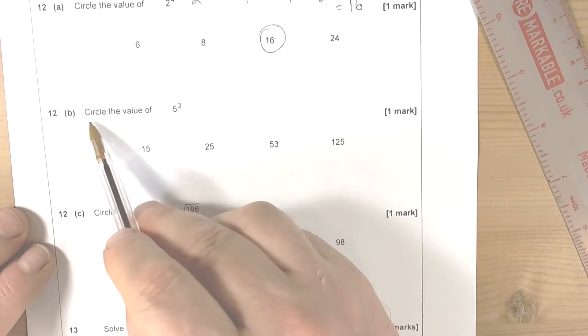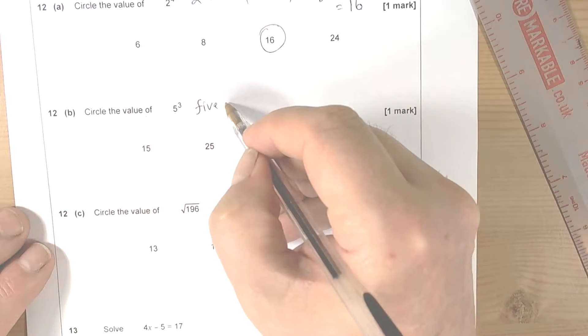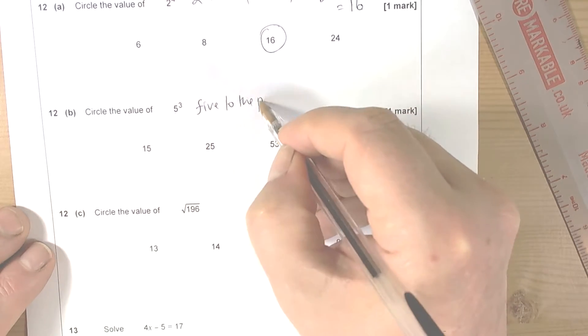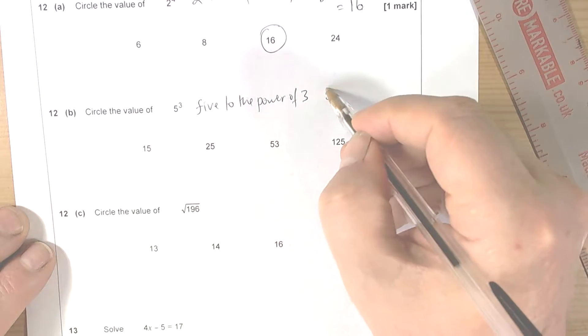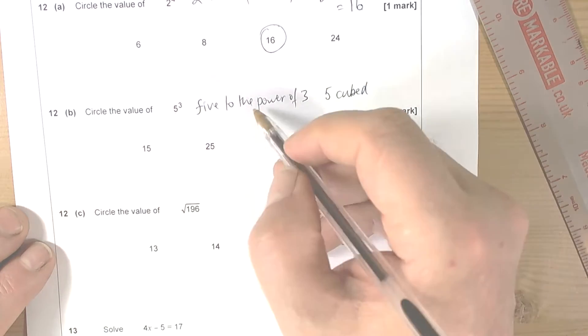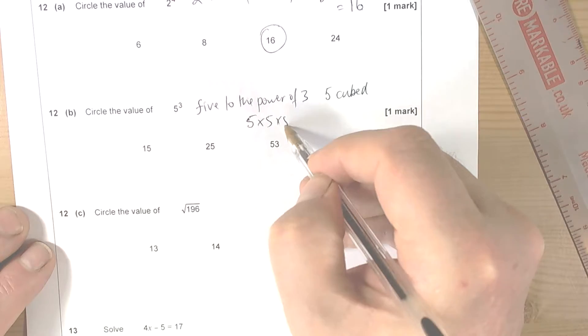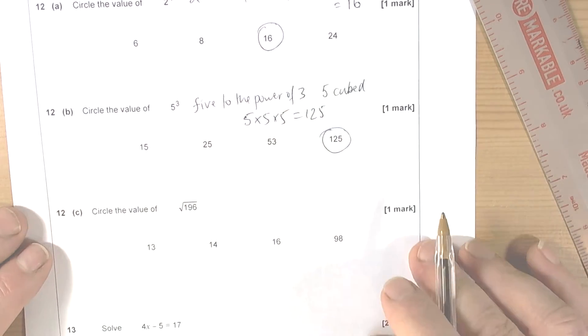Circle the value of 5 to the power of 3. So this is said as 5 to the power of 3, or 5 cubed is another way of thinking of that. And what that means is we're doing 5 times 5 times 5, which is going to be 125.